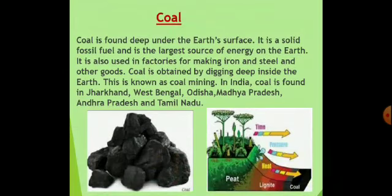Coal is found deep under the earth's surface. It is a solid fossil fuel and is the largest source of energy on the earth. It is also used in factories for making iron and steel and other goods. Coal is obtained by digging deep inside the earth; this is known as coal mining. In India, coal is found in Jharkhand, West Bengal, Odisha, Madhya Pradesh, Andhra Pradesh and Tamil Nadu. The major coal mines in India are in Bokaro, Dhanbad, Dharia, Raniganj and Korba. Coal was used in engines to cook food and to keep homes warm during winter in the olden days.